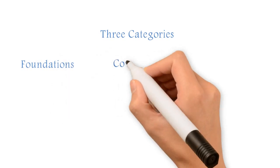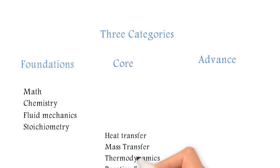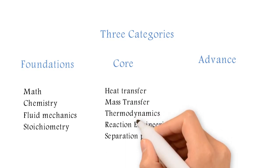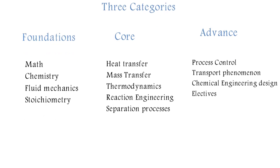Fundamentals are the base of chemical engineering. It involves math, chemistry, fluid mechanics, and stoichiometry. Core units involve some really interesting subjects like heat and mass transfer, thermodynamics, reaction engineering, and separation processes. At last, there are some advanced units like transport phenomena, process instrumentation, and chemical engineering design. I will define some major subjects here.